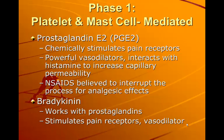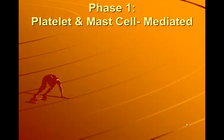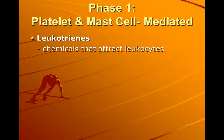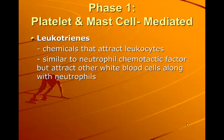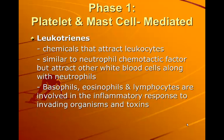Bradykinin works with prostaglandins, stimulates pain receptors, and is a vasodilator. Leukotrienes are chemicals that attract leukocytes, or white blood cells. Similar to neutrophil chemotactic factor, they attract other white blood cells along with neutrophils. Basophils, eosinophils, and lymphocytes are involved in the inflammatory response to invading organisms and toxins.